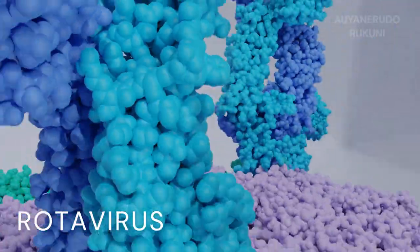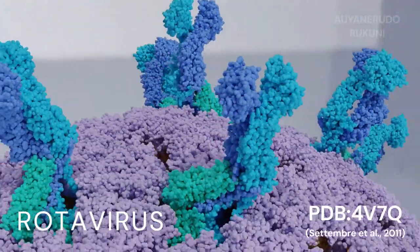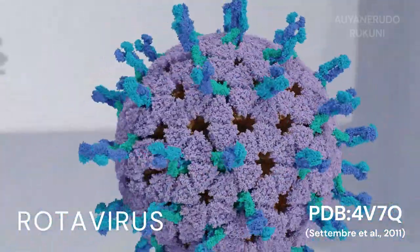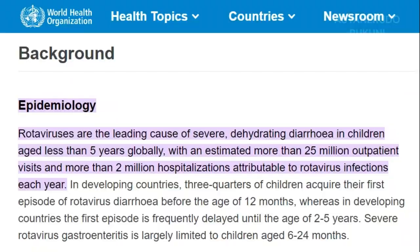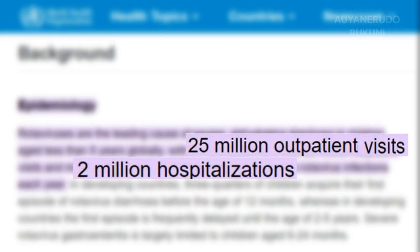Advances in structural biology have allowed researchers to further understand the structure and mechanism of rotavirus. This potentially life-threatening pathogen causes severe gastroenteritis in millions of people, particularly young children.